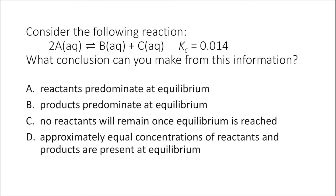Looking at this reaction here — 2A being converted to B plus C — if we have an equilibrium constant equal to 0.014, what conclusion can we make? We write out our equilibrium constant expression: concentration of products raised to their respective coefficients divided by concentration of reactants raised to their respective coefficients. Since this value is smaller than one, at equilibrium we must have a higher concentration of reactant A than of B and C. So at equilibrium, reactants predominate.